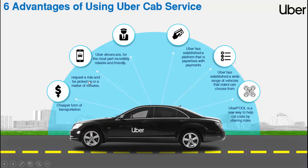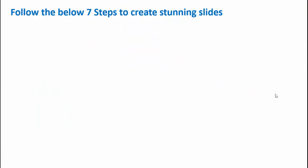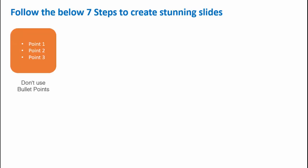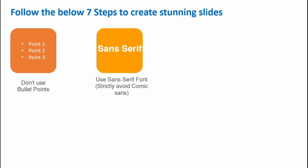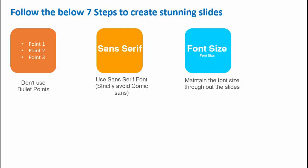So let's see how to do this presentation in PowerPoint. Before creating a PowerPoint presentation, follow these seven steps to create stunning slides. First, don't use bullet points — if you want to use them, use only one or two. Second, use very good fonts and strictly avoid Comic Sans, because Comic Sans is not for corporate or office culture. The font size should be maintained throughout the slides.